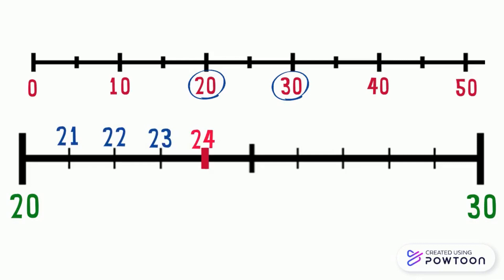Notice that the number 20 is the first ten that comes just before 24, and the number 30 is the first ten that comes just after 24. Now we have found that the number 24 belongs to the two nearest tens which are 20 and 30.